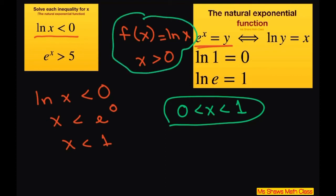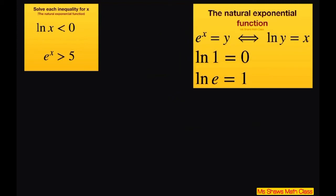Alright, let's start with the second one. And the second one, we can just take e to the x is greater than 5 and take ln of both sides. So use your power property and then ln of e equals 1. So that brings down.